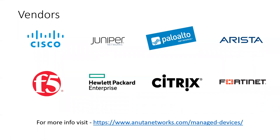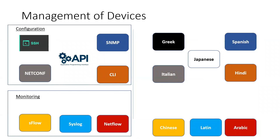How are these network devices managed? Each vendor has a different mechanism of accessing the device and configuring them. On the left side, we see the different technology standards like SSH, SNMP, NetConf, CLI, and API, which help the configuration of the devices, and Syslog, NetFlow, and SFlow to monitor the devices. Network administrators will use the IP address to access these devices, be it a switch, router, firewall, or load balancer. Let us understand these technology terms with an analogy.